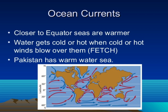Oceanic currents equalize global temperature by moving warmer water from the equator to the polar regions and returning cold water. The majority of the sun's heat is absorbed by the ocean around the equator, because the sun is vertically above the sea at the equator, giving it more sunlight compared to other parts of the globe. Oceanic currents distribute this heat to different regions.